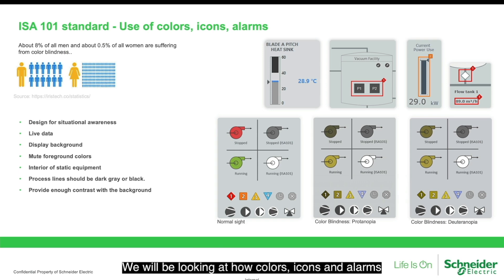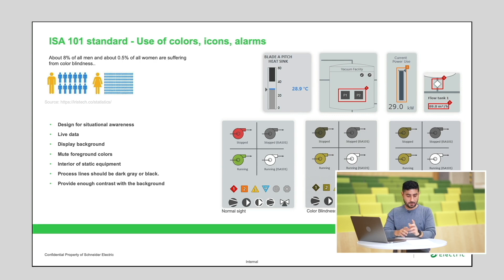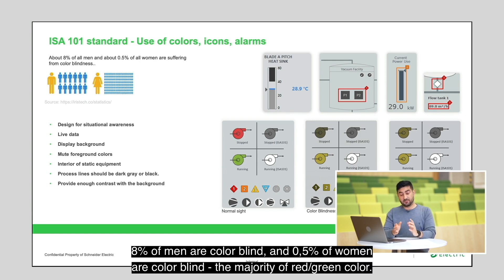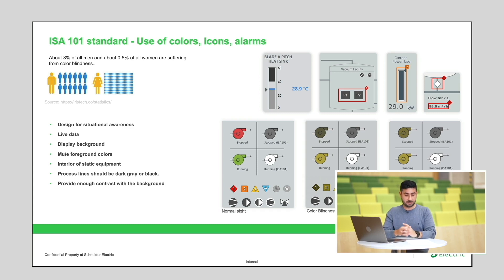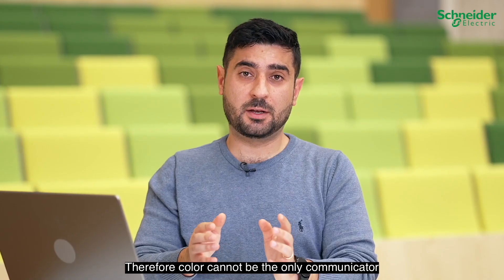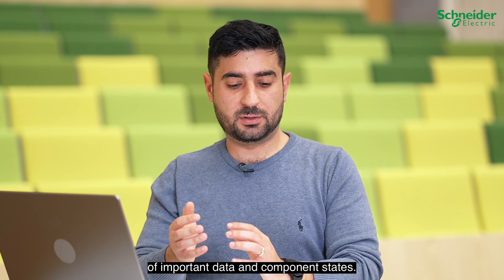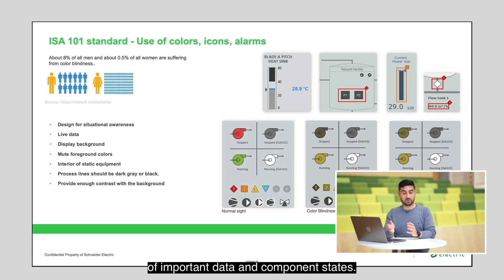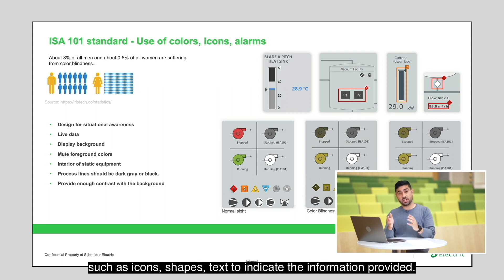Now that we have looked at how you can structure the hierarchy of your displays, we will be looking at how colors, icons, and alarms are used in ISO 101 standard. Eight percent of men are colorblind and 0.5 percent of all women are colorblind, the majority being red-green colorblind. Therefore, color cannot be the only communicator of important data and component states — it should be combined with graphical elements such as icons, shapes, and text to indicate the information provided.